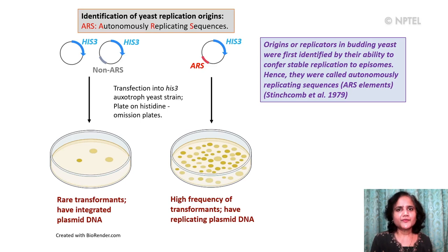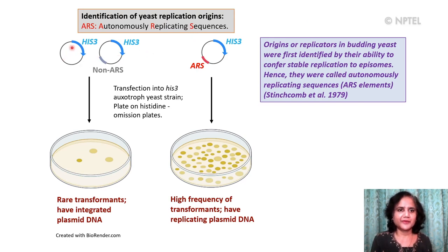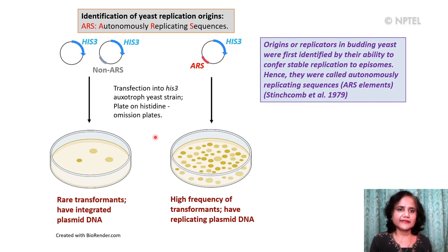In yeast, replication originates at specific sites termed origins or ARSs — autonomously replicating sequences. These origins in budding yeast were first identified by their ability to confer stable replication to episomes. In this type of experiment, different DNA fragments from yeast were cloned into a plasmid having a selectable marker — a histidine auxotrophic marker. A collection of such plasmids having DNA fragments from yeast were transfected into histidine auxotrophic yeast strains and plated on histidine omission selective plates to select for this marker.